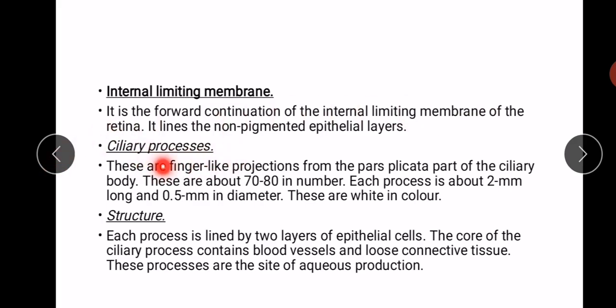The ciliary processes are finger-like projections from the pars plicata — a high-yield point. They are about 70 to 80 in number; each process is about 2 millimeters long and 0.5 millimeters in diameter, and they are white in color. They are lined by two layers of epithelial cells, and the core of each ciliary process contains blood vessels and loose connective tissue.